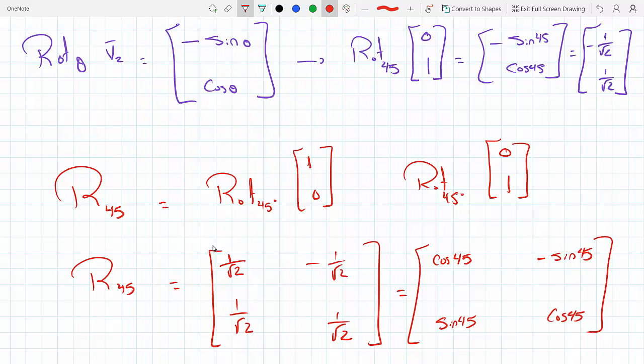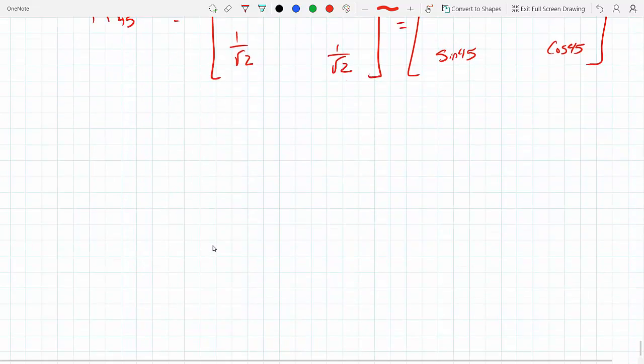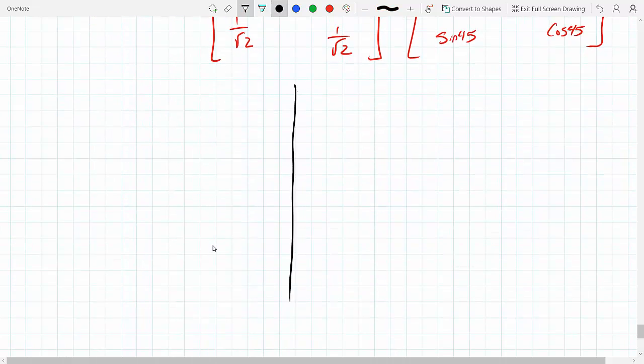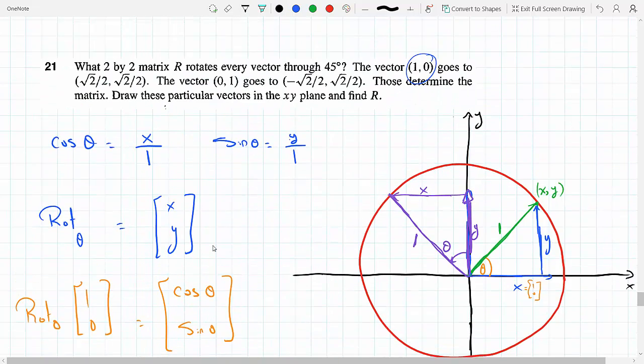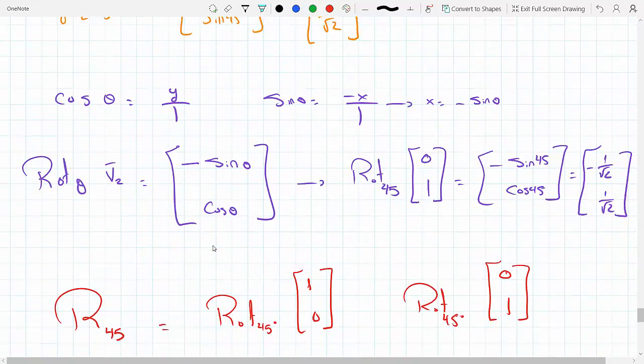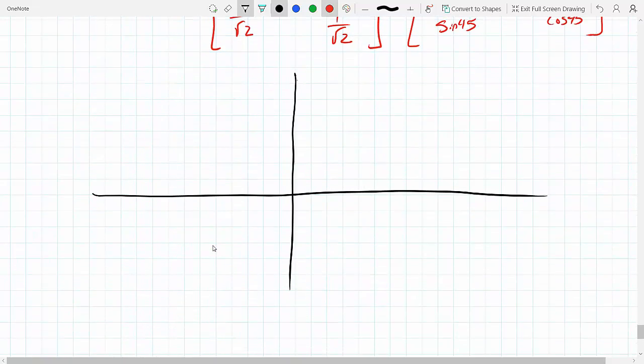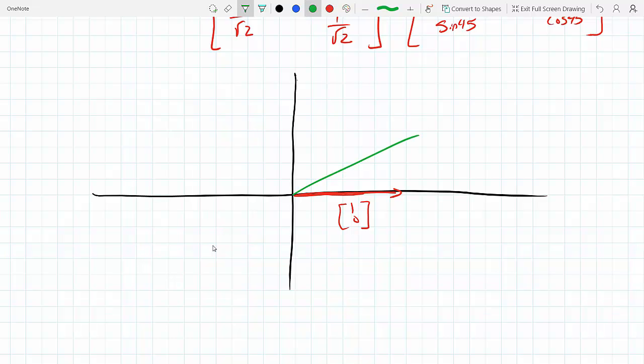And if I were to draw this, it says at the end of the question draw these particular vectors in the xy-plane. So this is my 1, 0 and I've rotated it 45 degrees so now this is 1 over root 2, 1 over root 2. And the y was here, the 0, 1.